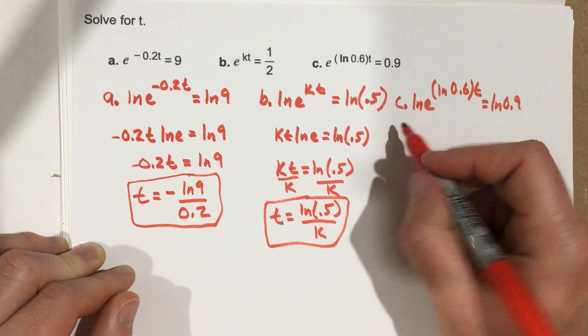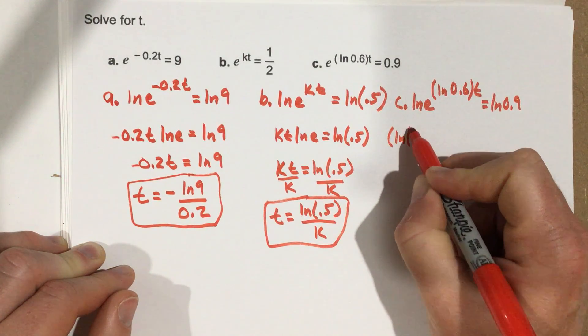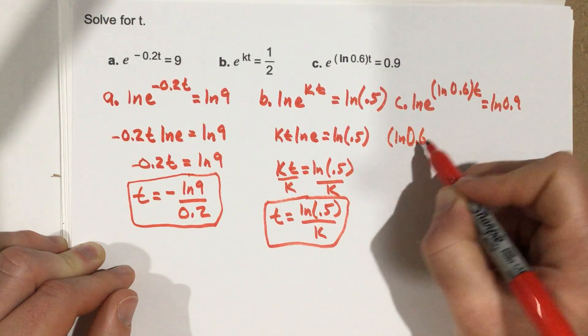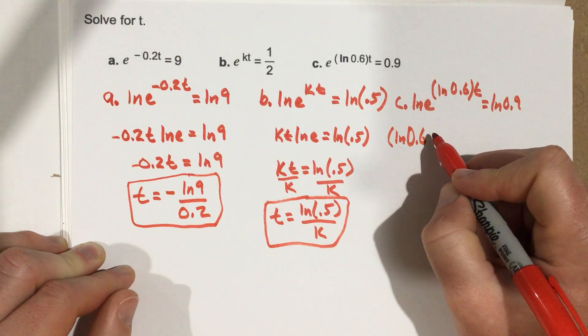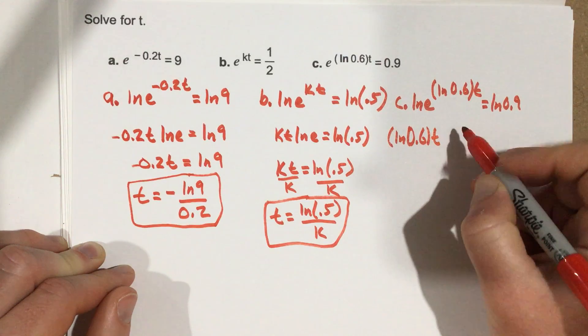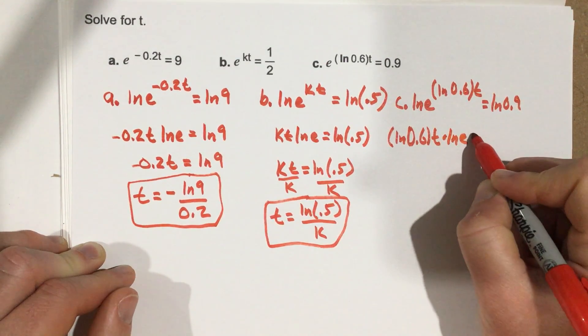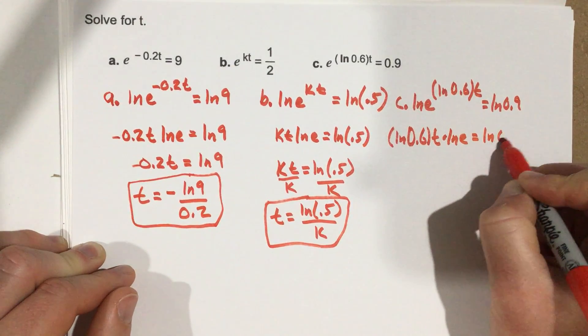This exponent is going to come to the front, so I end up with natural log of 0.6 t times natural log e equals natural log of 0.9.